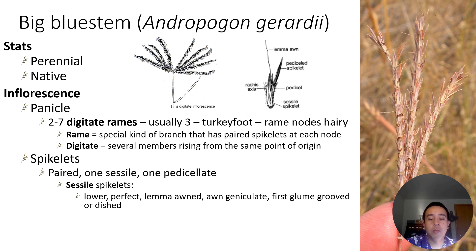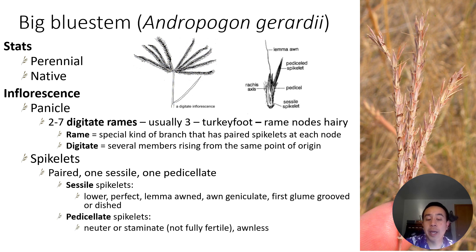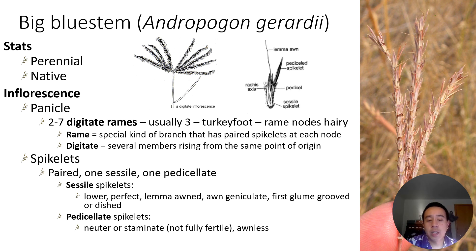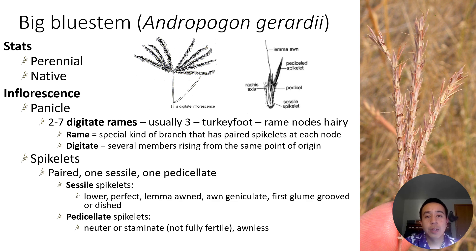The awns are geniculate — which means sharply bent. And the first glume is usually grooved or dish-shaped. The pedicillate spikelets, which come off that paired spikelet, are typically neuter or staminate, so they're not fully fertile — they don't have all the floral parts in that spikelet. And typically the pedicillate spikelet for big bluestem is awnless, meaning it has no awn.